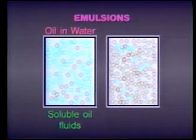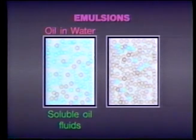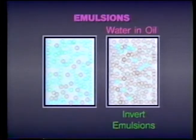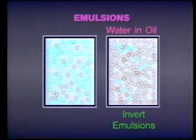However, soluble oil fluids are inexpensive, so you'll still see them used where the decision has been made to accept reduced component life in favor of an inexpensive fire-resistant fluid. When an emulsion has more oil than water, it's called an invert emulsion. They are usually no more than 40 percent water, which means they are less fire-resistant than soluble oils. But because they contain more oil than soluble oil fluids, they provide better lubrication.